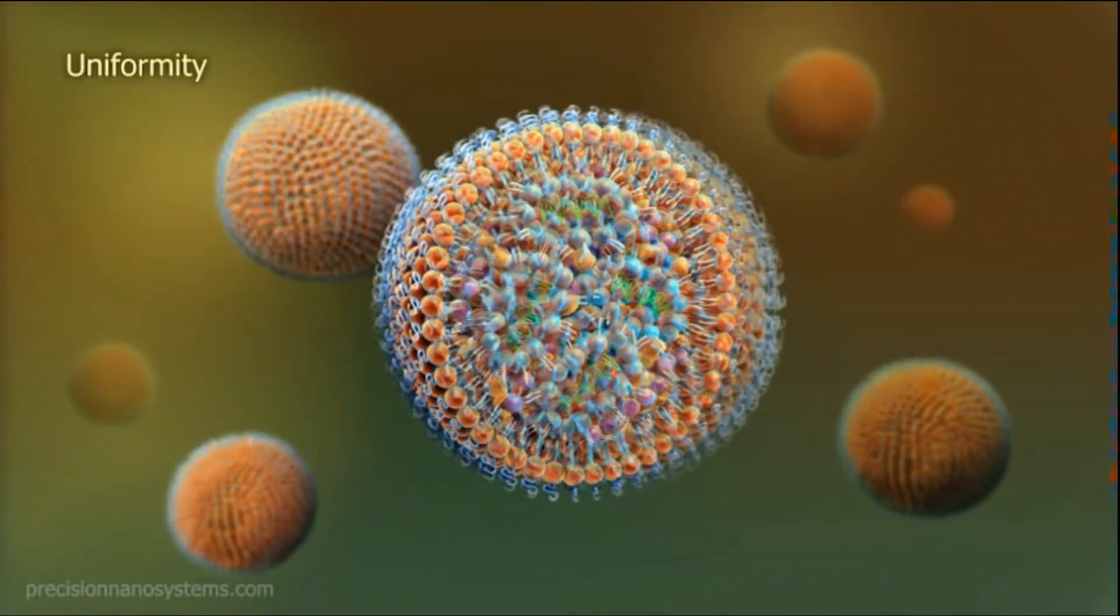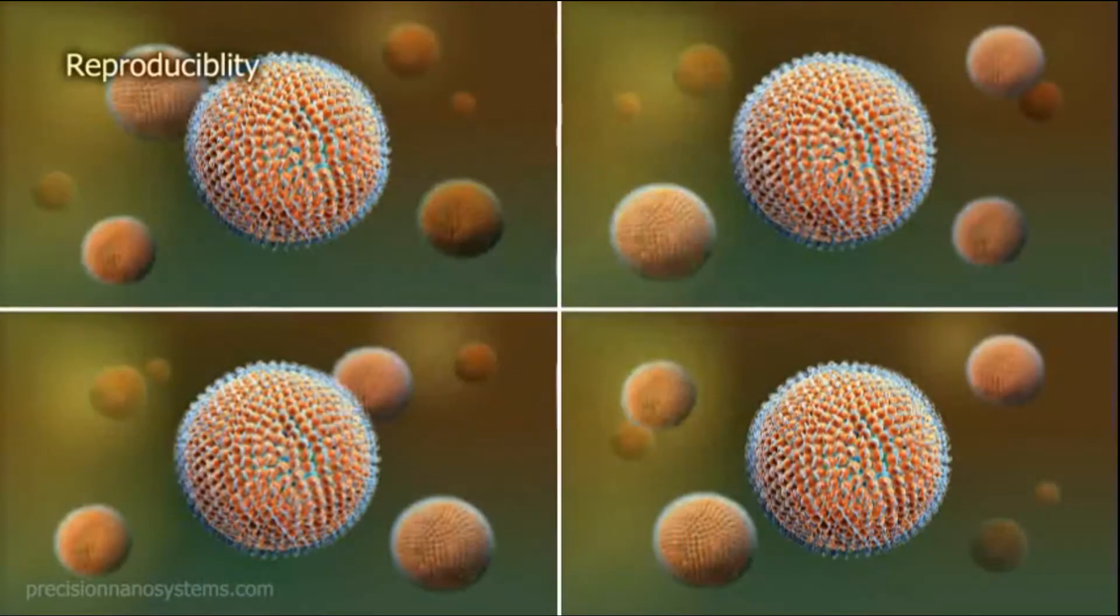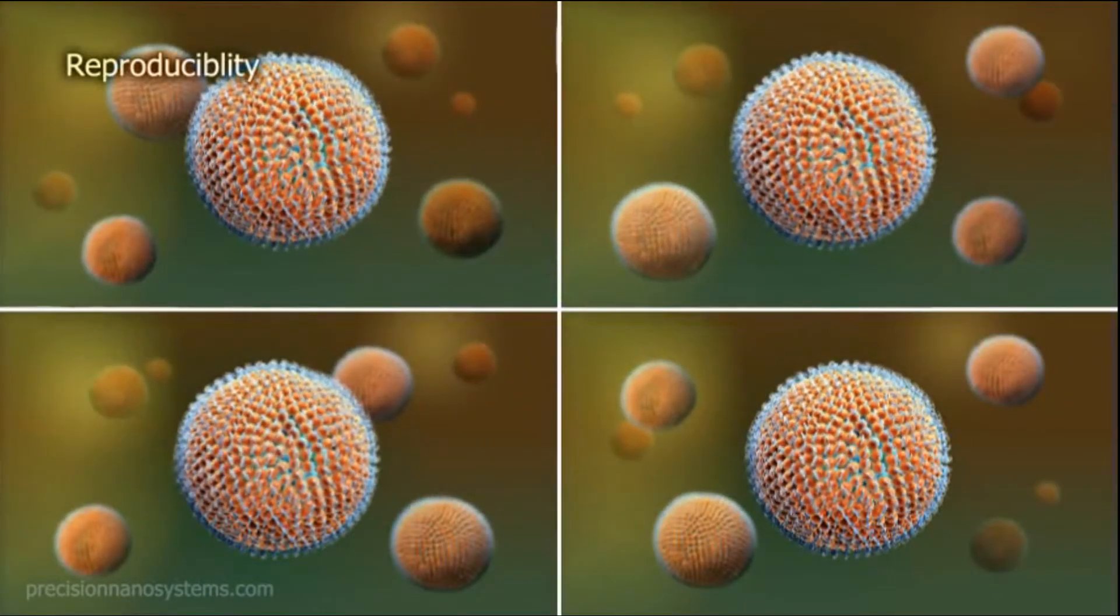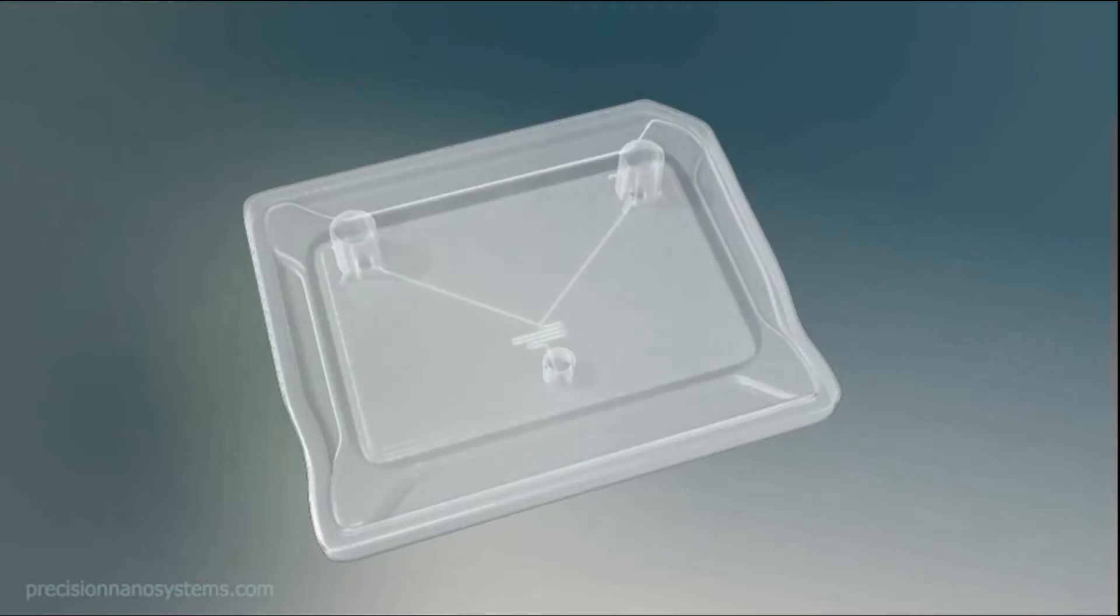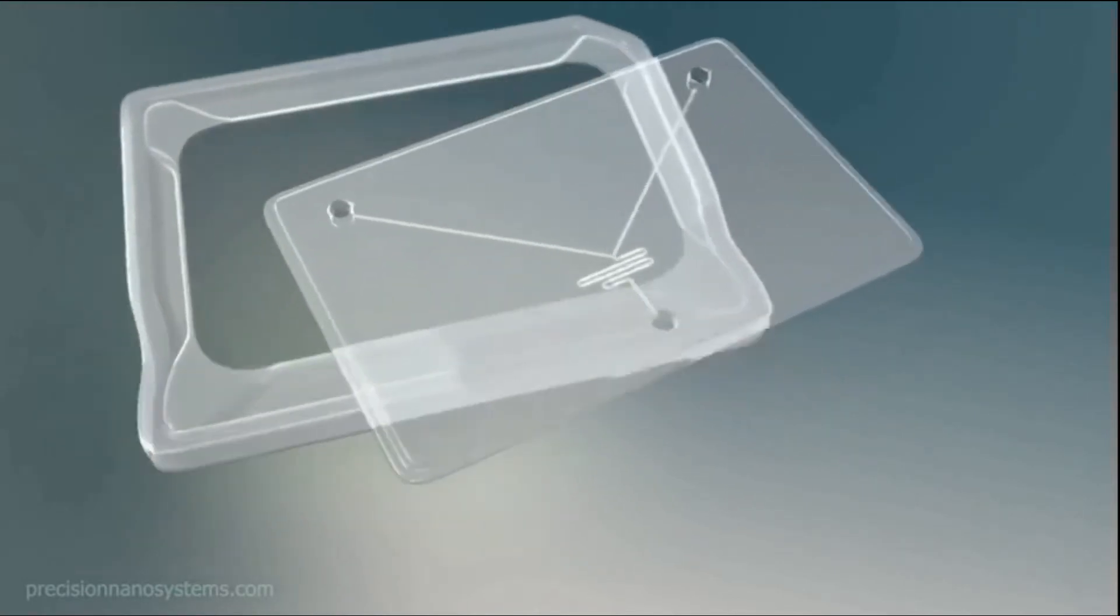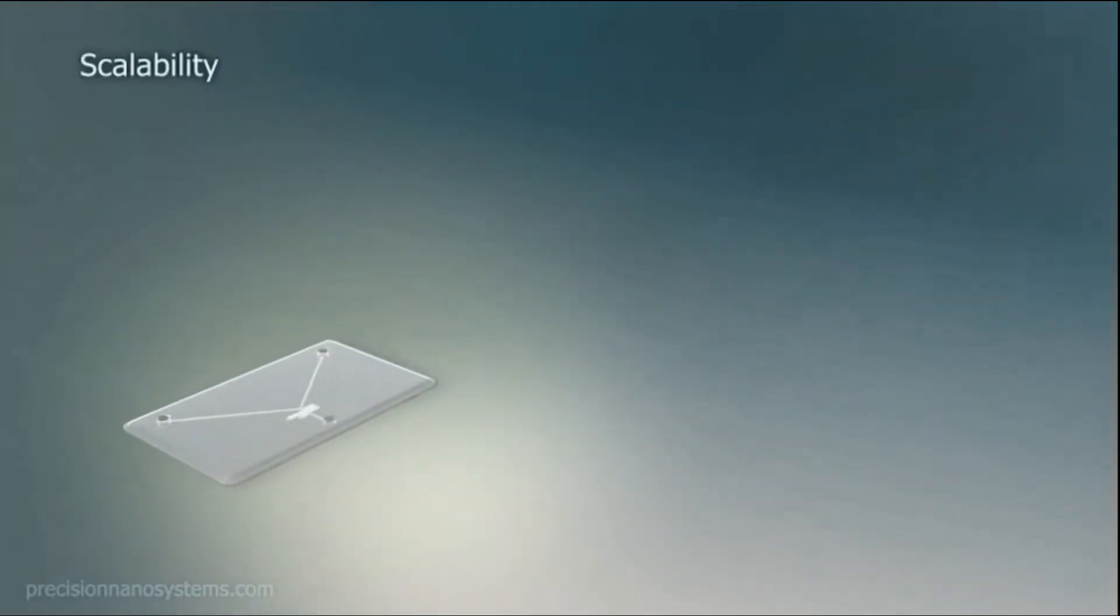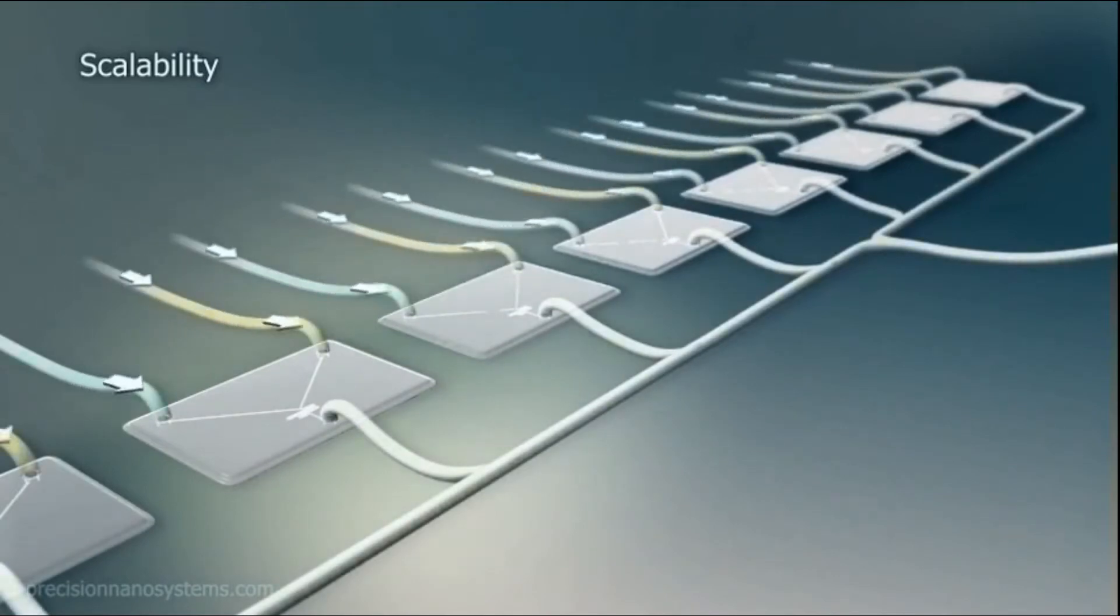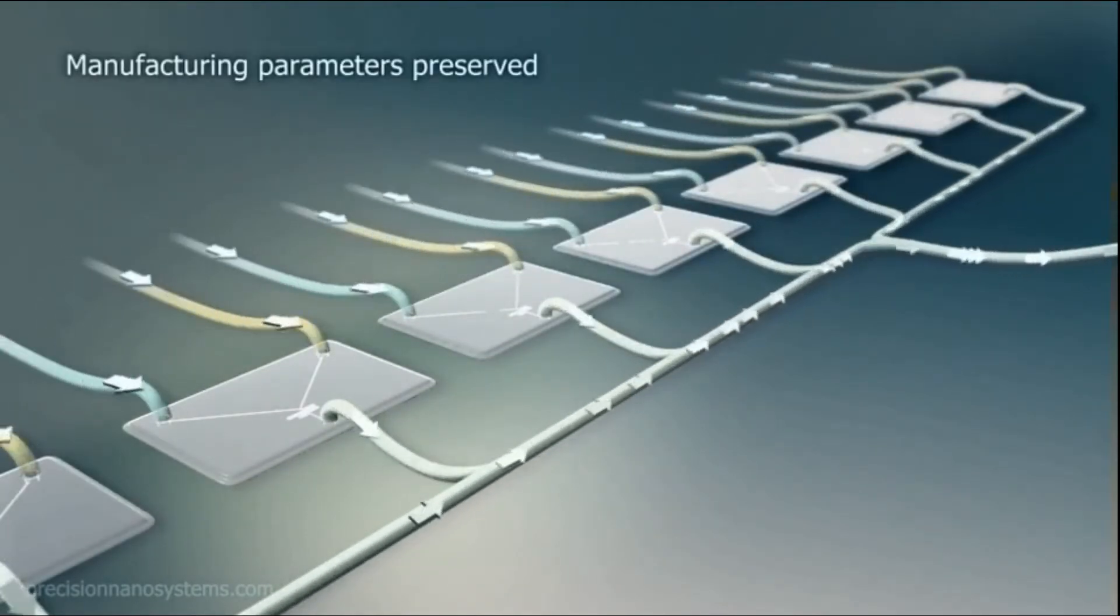The advantages stem from the microfluidic chamber. As the fluids mix, cationic lipids complex with the negatively charged nucleic acid to form the particle core. The helper lipids aggregate further, and the PEG lipids orient themselves on the surface with hydrophobic tails pointing inwards. This process creates uniform particles and is highly reproducible.